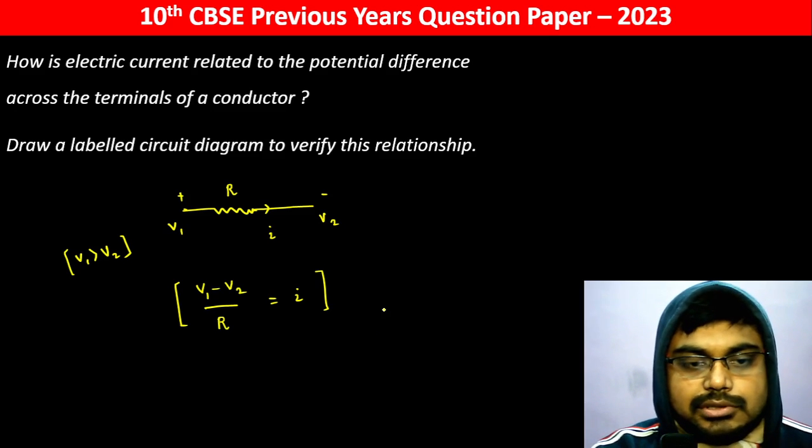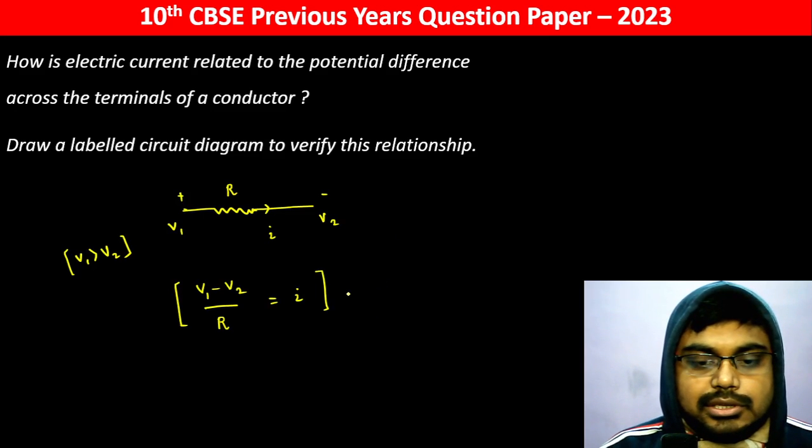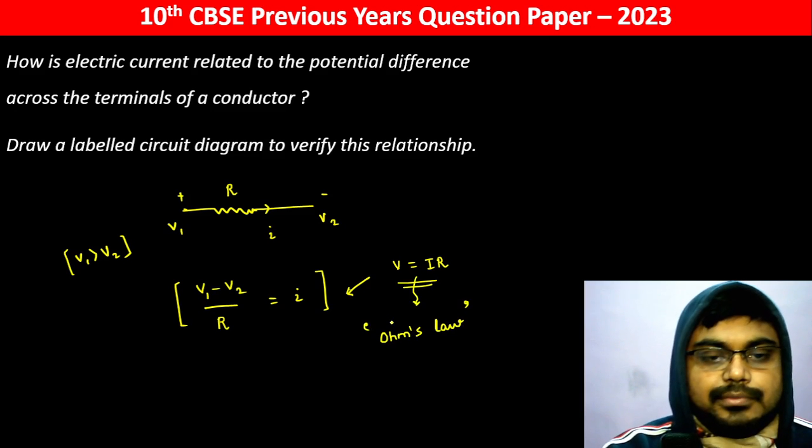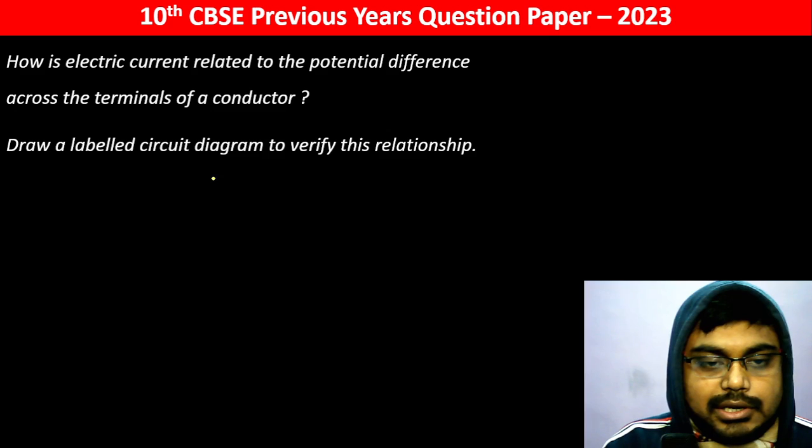Draw a labeled circuit diagram to verify this relationship. Basically, we call it V equals IR. This is actually Ohm's law. To verify Ohm's law, we need to verify this.